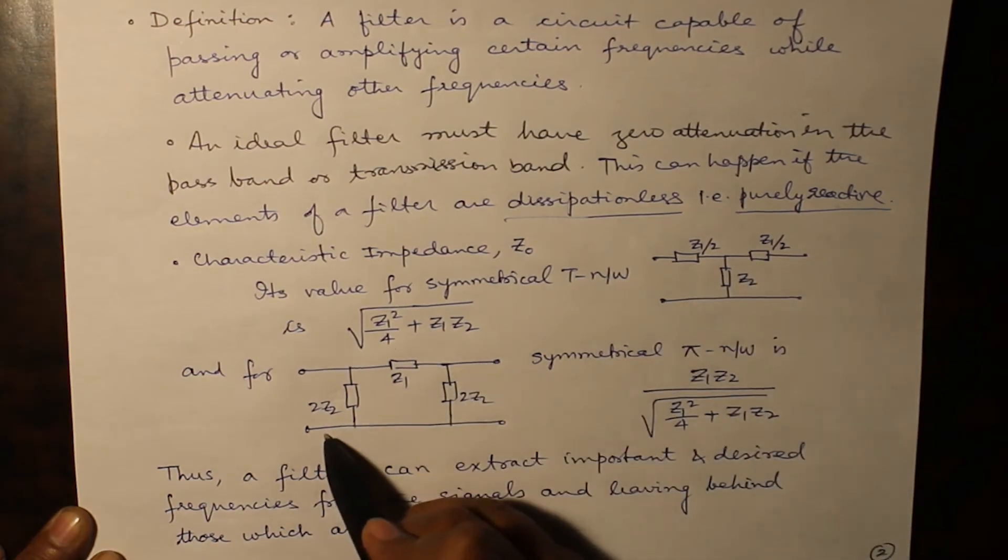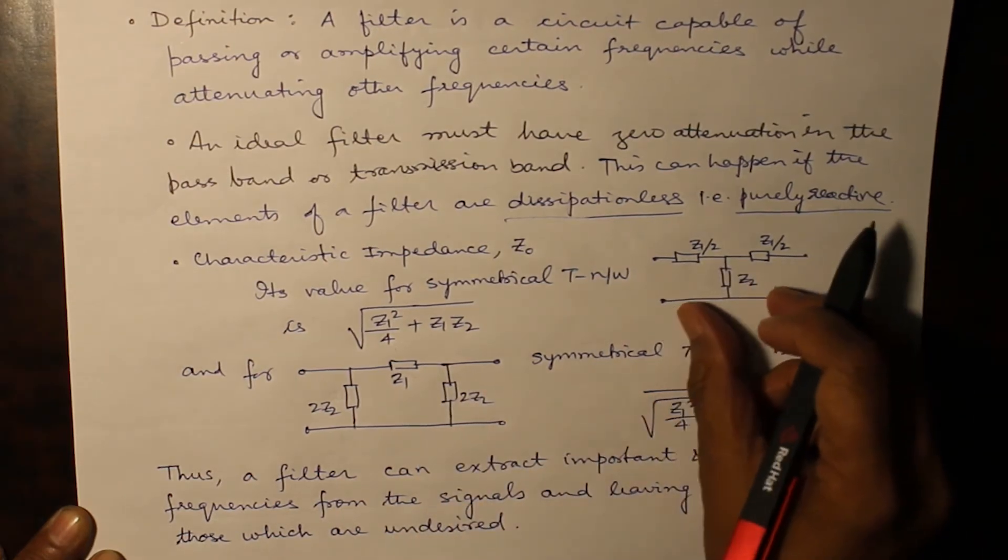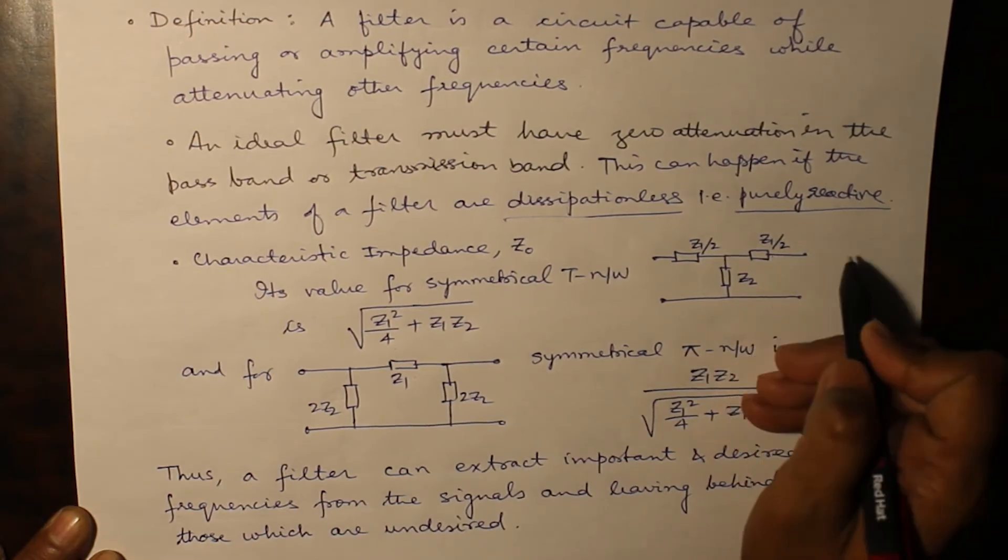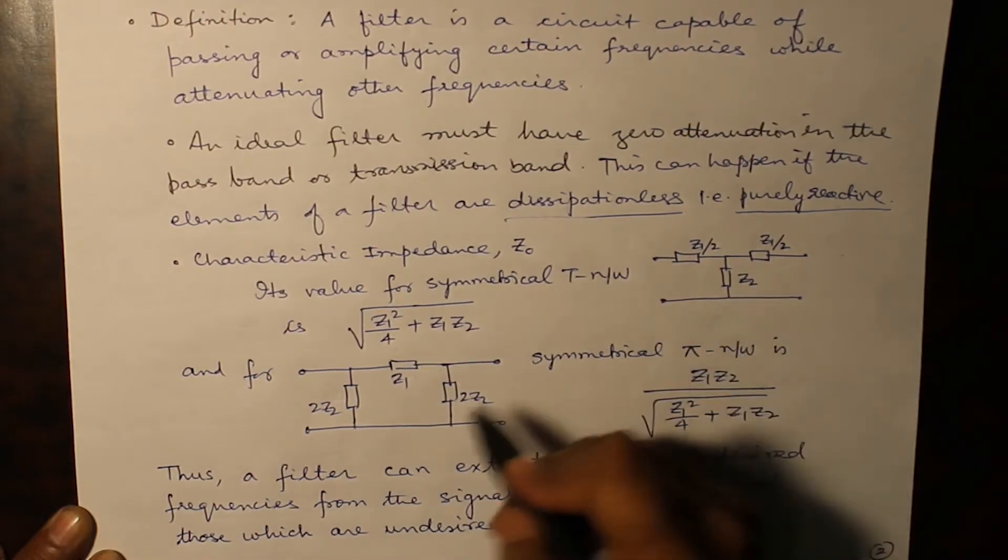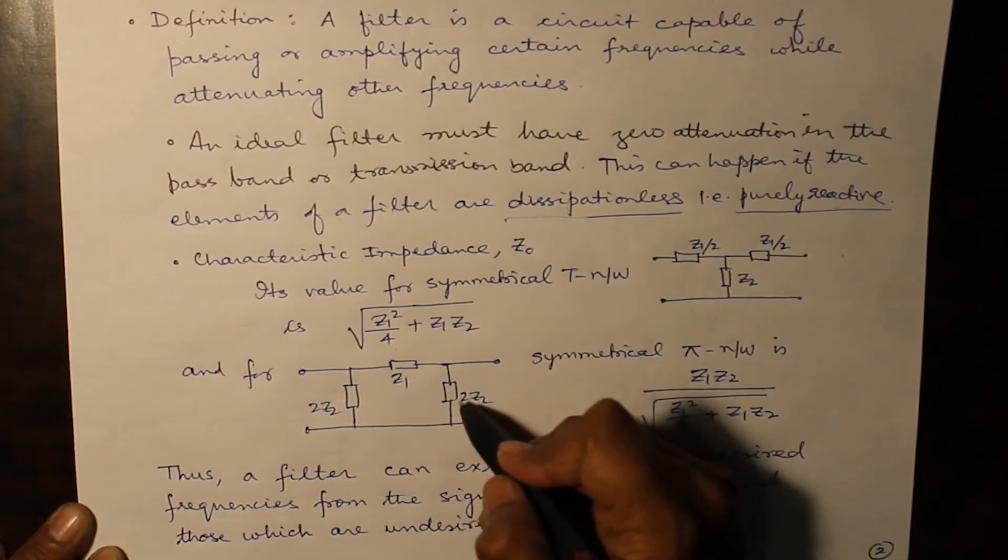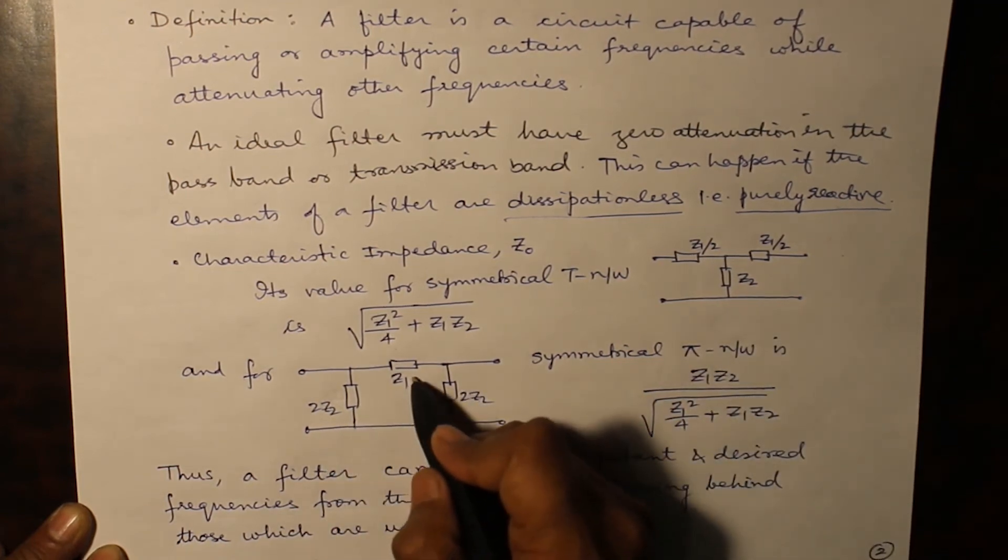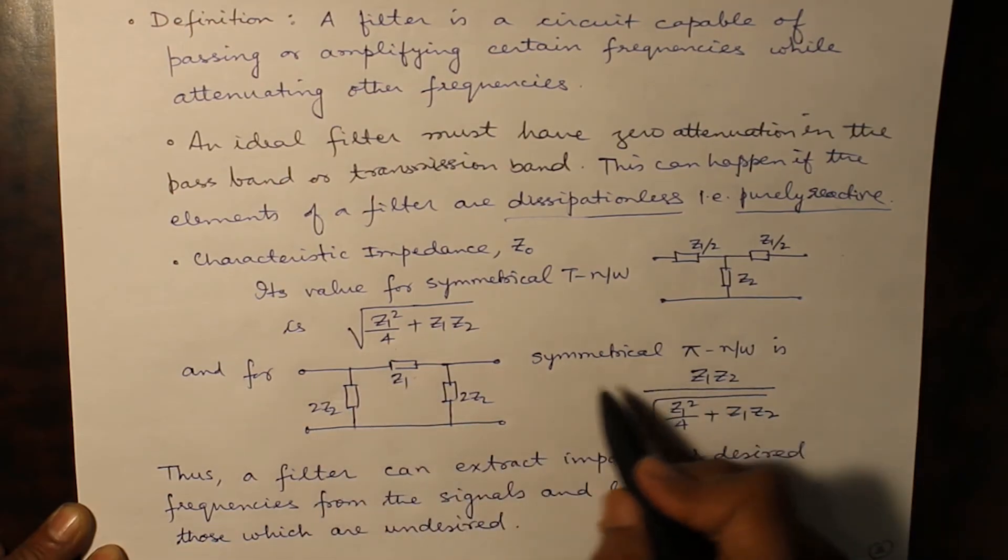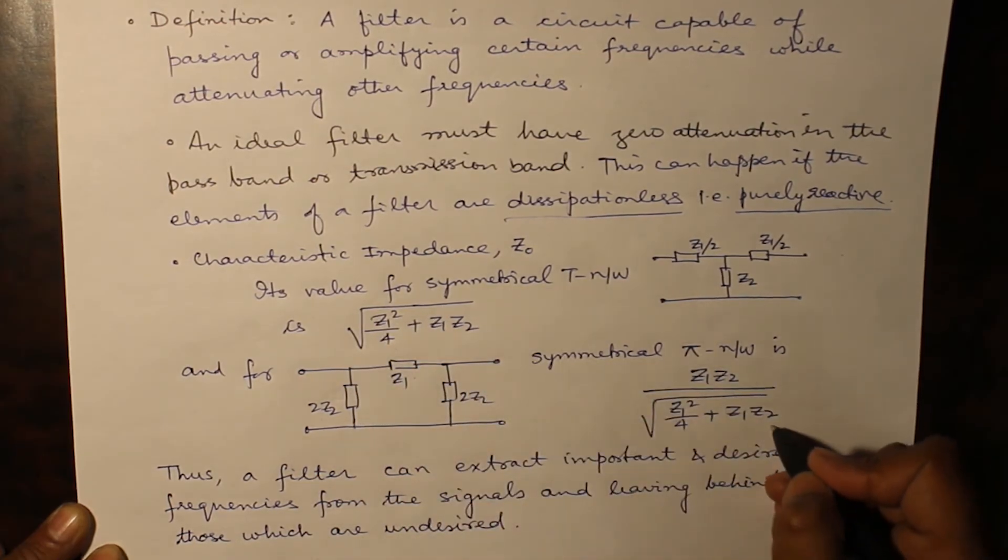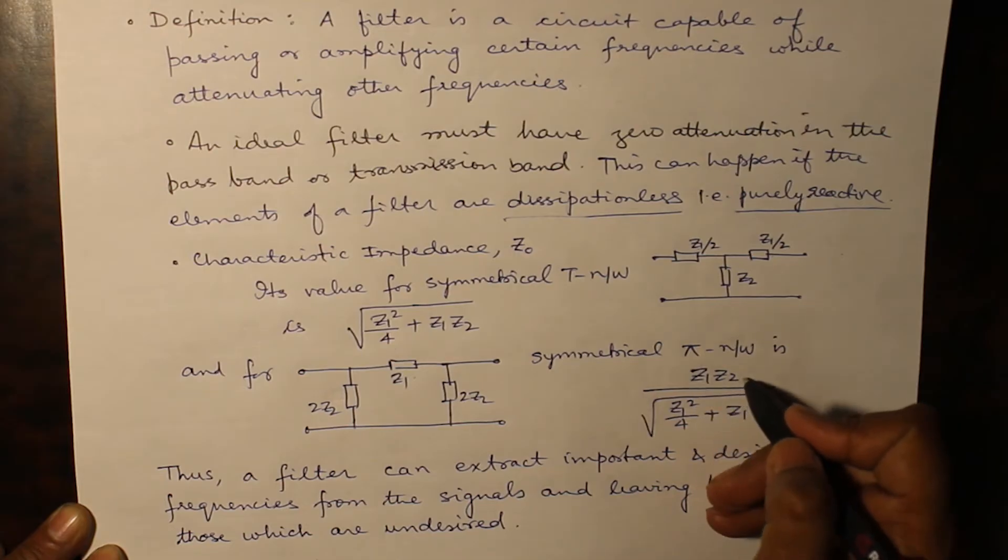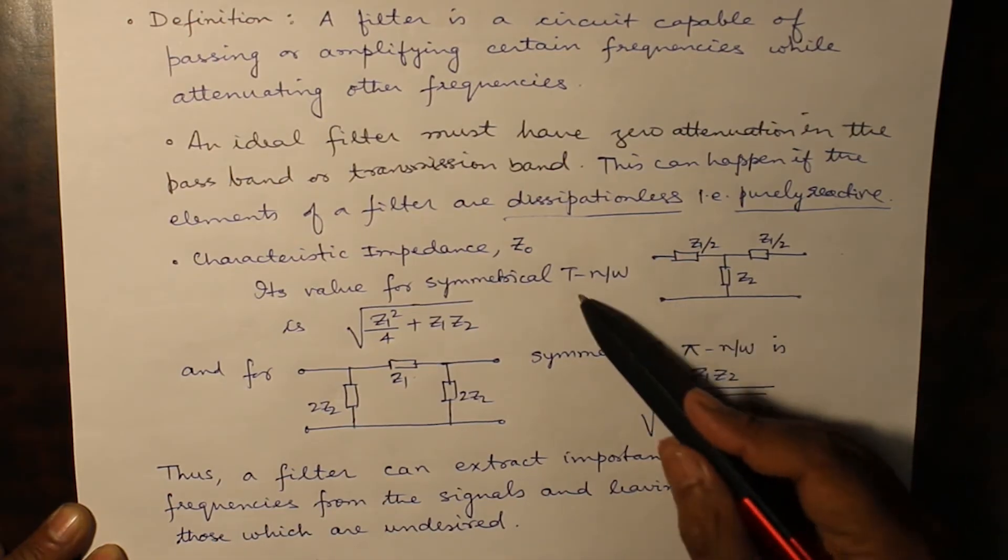Similarly for a pi network, here you will write Z1, and Z2 and Z2 gives you 2 Z2. The characteristic impedance of this symmetrical pi network is equal to Z1 Z2 over the characteristic impedance of a T network.